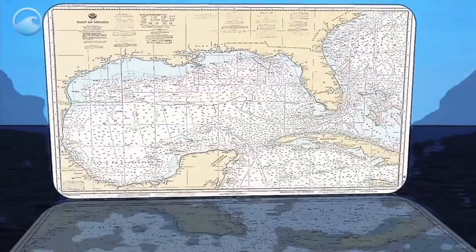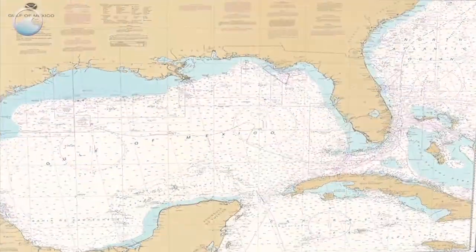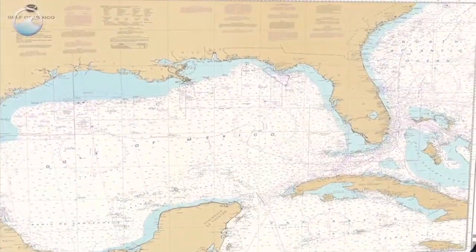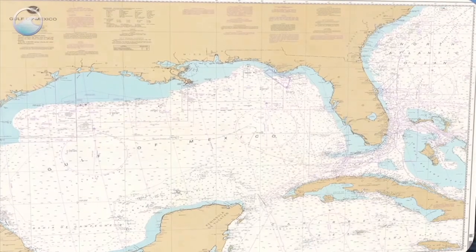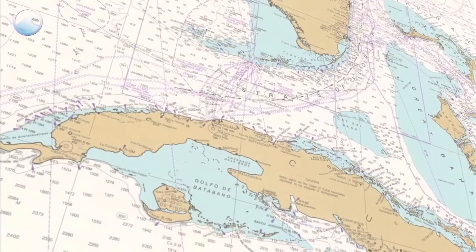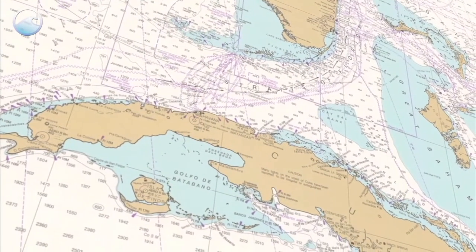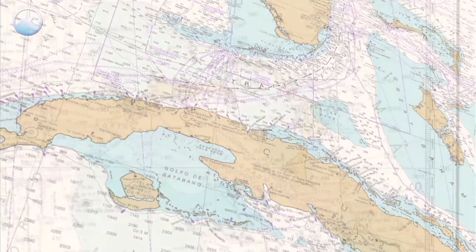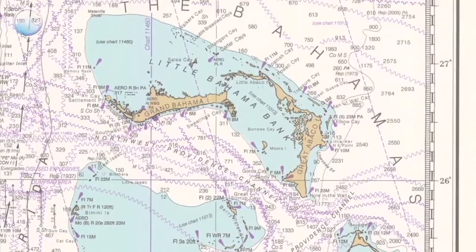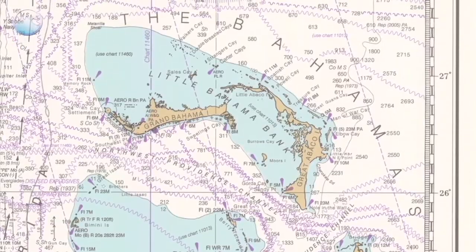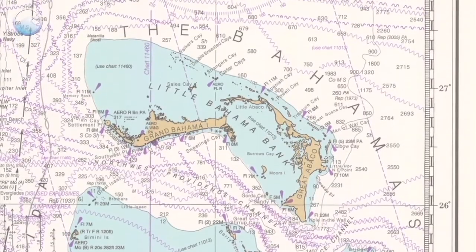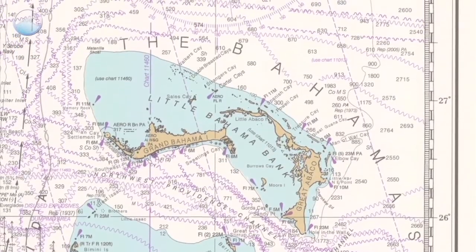At first glance, a nautical chart may look overwhelming. But once you learn what the various lines, numbers, and symbols mean, reading these charts becomes a lot easier. Let's go over some basics.